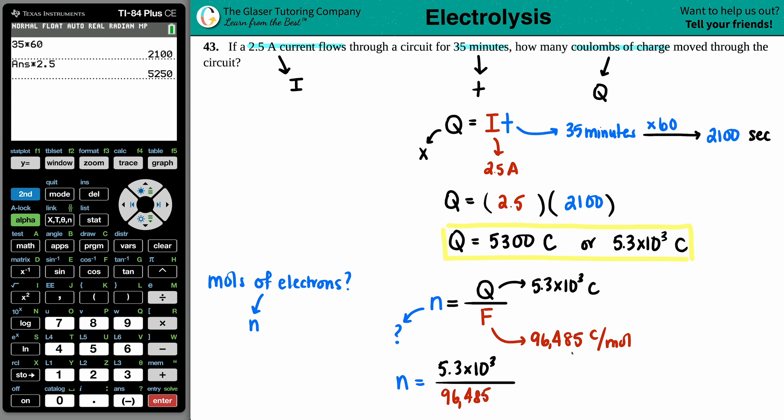So I'll just take 5,300 divided by 96,485, and still two sig figs if you want, so we could do 0.055. And that's how many moles of electrons, so e minus is electrons.